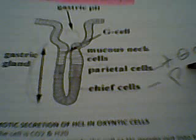Inside the cell, we have carbon dioxide and water. Potassium from inside the lumen moves into the cell as hydrogen moves out into the lumen. Bicarbonate (HCO₃⁻) then moves out of the cell and into the interstitium, as chlorine from the interstitium moves into the cell.